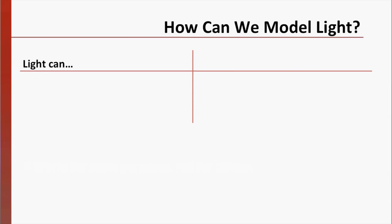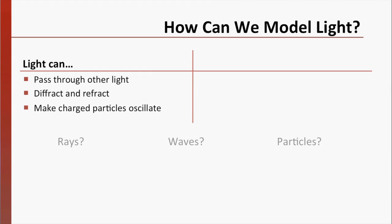Let's consider some of the things we might want to use to build our model of light. We know from our list that light can pass through other light. It can diffract and refract, and it can make charged particles oscillate. You may have heard light described in terms of rays of light, or waves, or particles called photons. Which one of these models seems to fit these observations? Pause the video to consider.